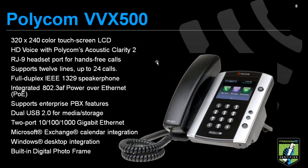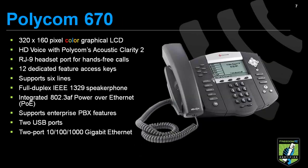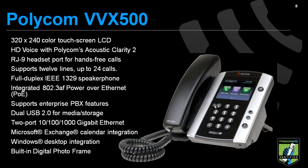The VVX500 gives you a 320 by 240 color touchscreen LCD. You'll notice a lot of buttons on the 670, which are very similar to the 550, have been replaced — very minimalistic, with only a few extra buttons because everything is on the touchscreen. The touchscreen is very responsive; it doesn't feel cheap, it feels like thick glass, very much like a top-of-the-line iPhone or Android phone. It supports up to 12 lines, has a USB input for loading photos or contact pictures, and does have gigabit Ethernet pass-through.